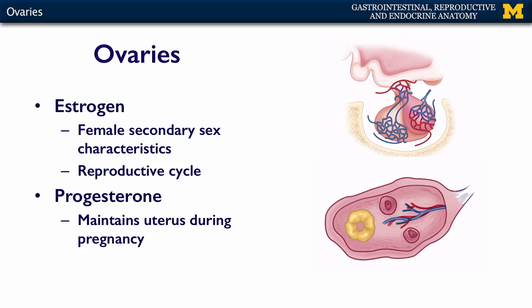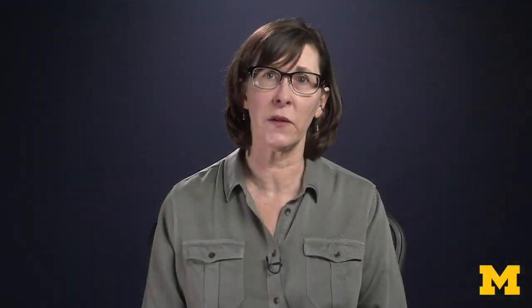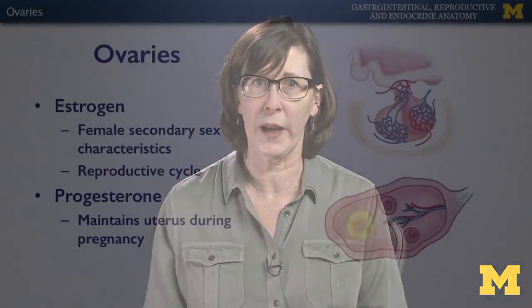Estrogen and progesterone secreted by the ovaries have functions throughout the body. Estrogen is responsible for female secondary sex characteristics, including breast development and the deposition of adipose tissue in a particularly feminine way. It also supports the female reproductive cycle. Progesterone is very important for maintaining the uterus during pregnancy.